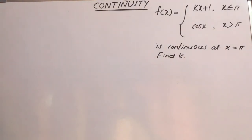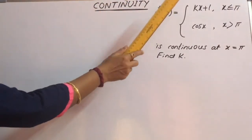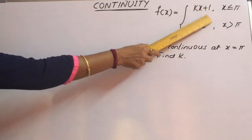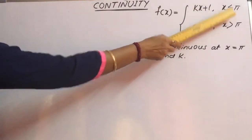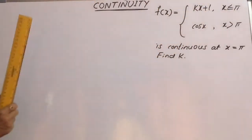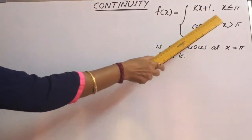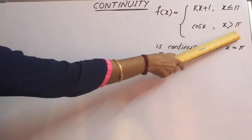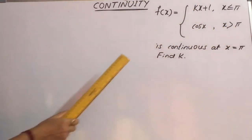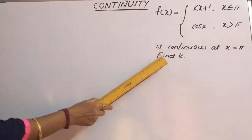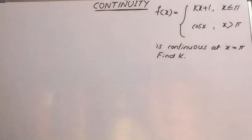Now let us consider one more question under continuity. f(x) = kx + 1 if x is less than or equal to π, and f(x) = cos(x) if x is greater than π. It is continuous at x = π. So find k.